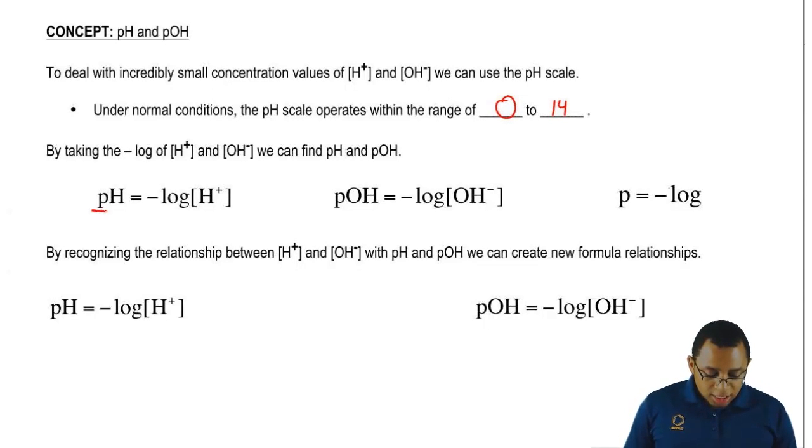So pH just means negative log of H plus concentration or negative log of H3O plus. Because remember, we've said this before, H positive and H3O plus are the same exact thing.